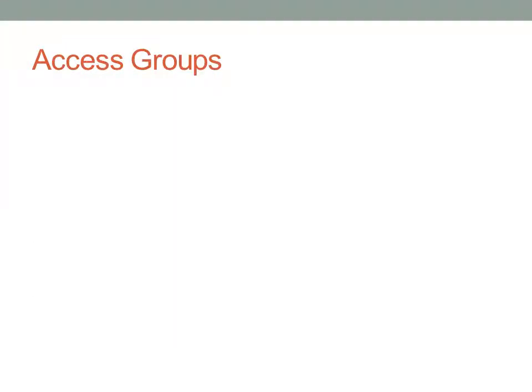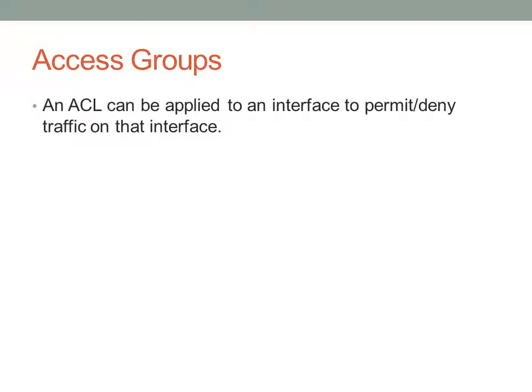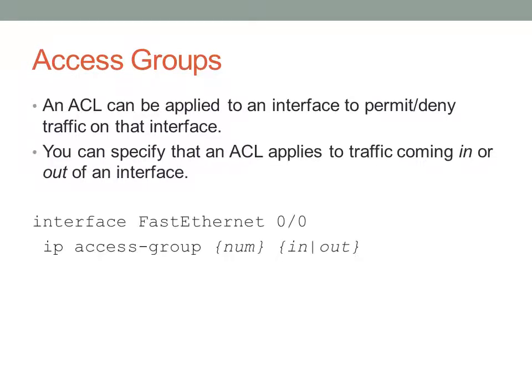The most common way an access list is applied is with an access group. An access list can be applied to an interface to permit or deny traffic — very commonly implemented as a firewall on a WAN interface. For example, under 'interface FastEthernet 0/0', you would use the command 'ip access-group' followed by the access list number and then 'in' or 'out' to specify whether inbound or outbound traffic should be matched.